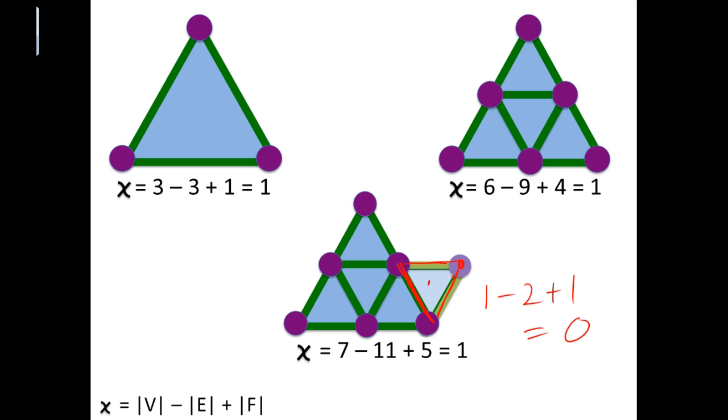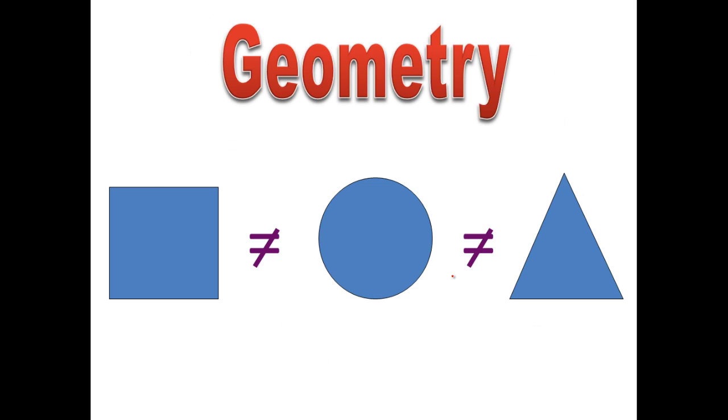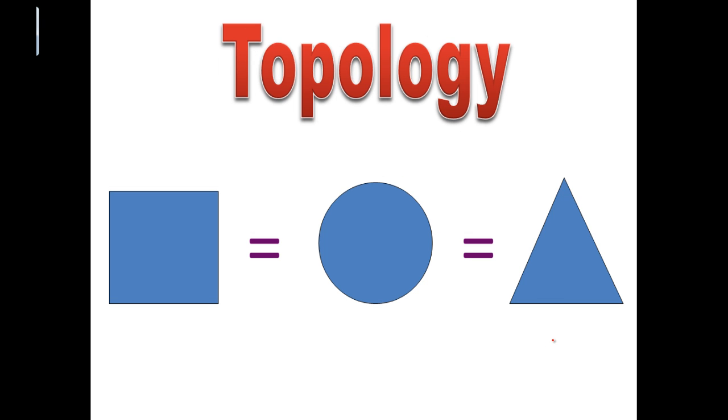What the Euler characteristic tells us is that it gives us information about the topology of an object. In kindergarten you learned that a square was different from a circular disk and different from a triangle. In graduate school mathematics, you learn that a square, a circular disk, and a triangle are all the same if we're interested in topology. Topology is frequently called rubber geometry or clay geometry because we are allowed to stretch and twist objects without changing the topology. What we're not allowed to do is glue things together or tear things, as those operations change the topology.